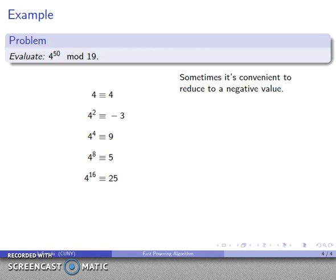4 to the 16th, 5 squared, 25, down to 6. 4 to the 32nd, 4 to the 16th squared, 6 squared, 36. And again, this time I'll knock that down to negative 2 rather than the corresponding value 17. And again, this way I can work with even smaller numbers if I should want to.